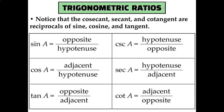You'll notice similarities between these ratios. Sine and cosecant are inverses: sine is opposite over hypotenuse, and cosecant is hypotenuse over opposite. The same idea applies to cosine and secant, and tangent and cotangent. Cosine is adjacent over hypotenuse, but secant is its reciprocal: hypotenuse over adjacent. Tangent is opposite over adjacent, but cotangent is adjacent over opposite. There's no cosecant, secant, or cotangent button on your calculator, so you'd use one divided by the corresponding primary ratio.